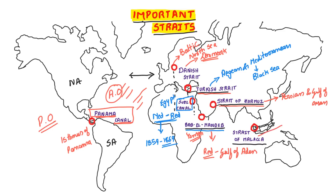Next is the Strait of Malacca. This is almost 550 miles long. It connects the Malay Peninsula and the Sumatra island of Indonesia.